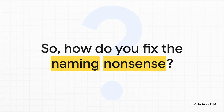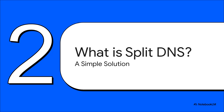Well, it turns out the community has pretty much landed on a really elegant solution that, once you get it, just makes everything click into place. And that solution is called split DNS — you might also hear it called split horizon DNS. Now I know the name sounds a little complicated, maybe a bit technical, but the core idea is actually incredibly simple and, honestly, really powerful. So let's break it down.